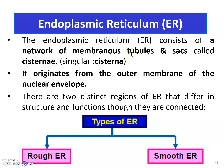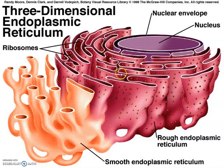The second organelle is the endoplasmic reticulum. It can be divided into two types — rough endoplasmic reticulum and smooth endoplasmic reticulum — based on the appearance of their membrane. In the diagram, the pink structure represents rough endoplasmic reticulum, whose surface has ribosomes attached, which is why it is called 'rough.' The smooth endoplasmic reticulum is the orange organelle, which has no ribosomes attached, so its surface is smooth.